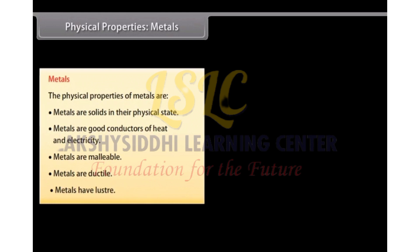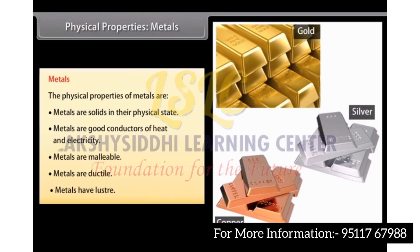Lustre: Metals reflect light from their shiny surface. They can also be polished. For example, gold, silver and copper are metals with a shiny surface and can be polished.